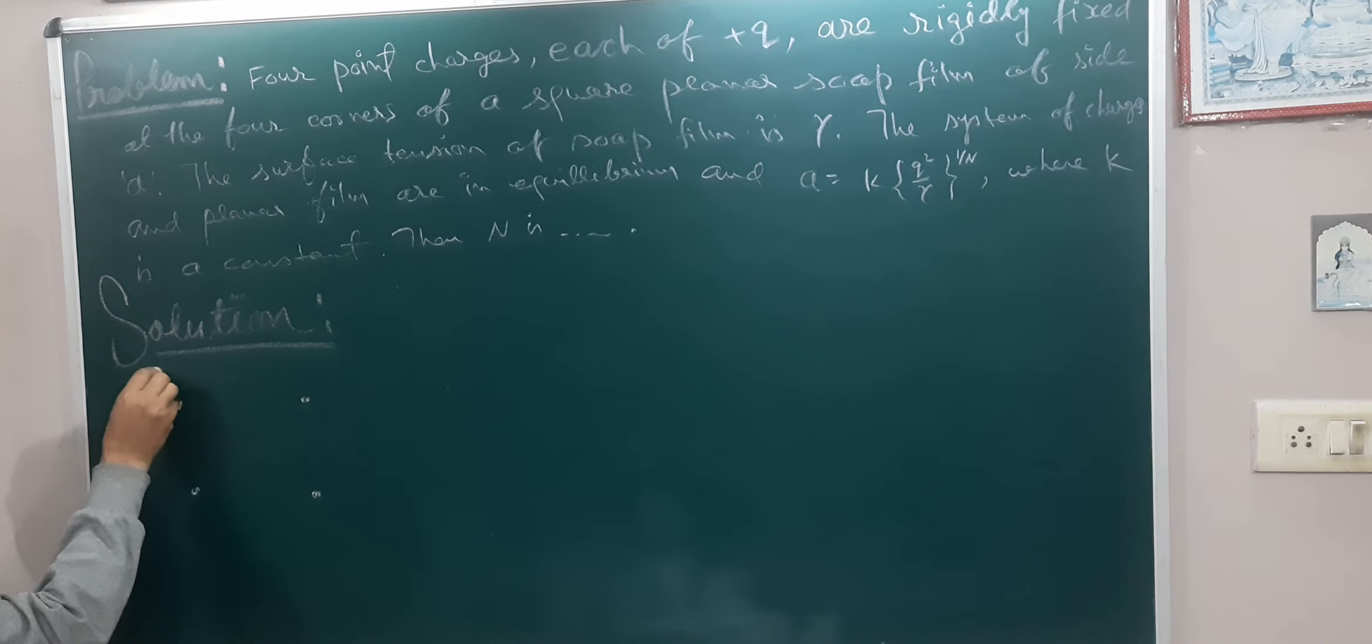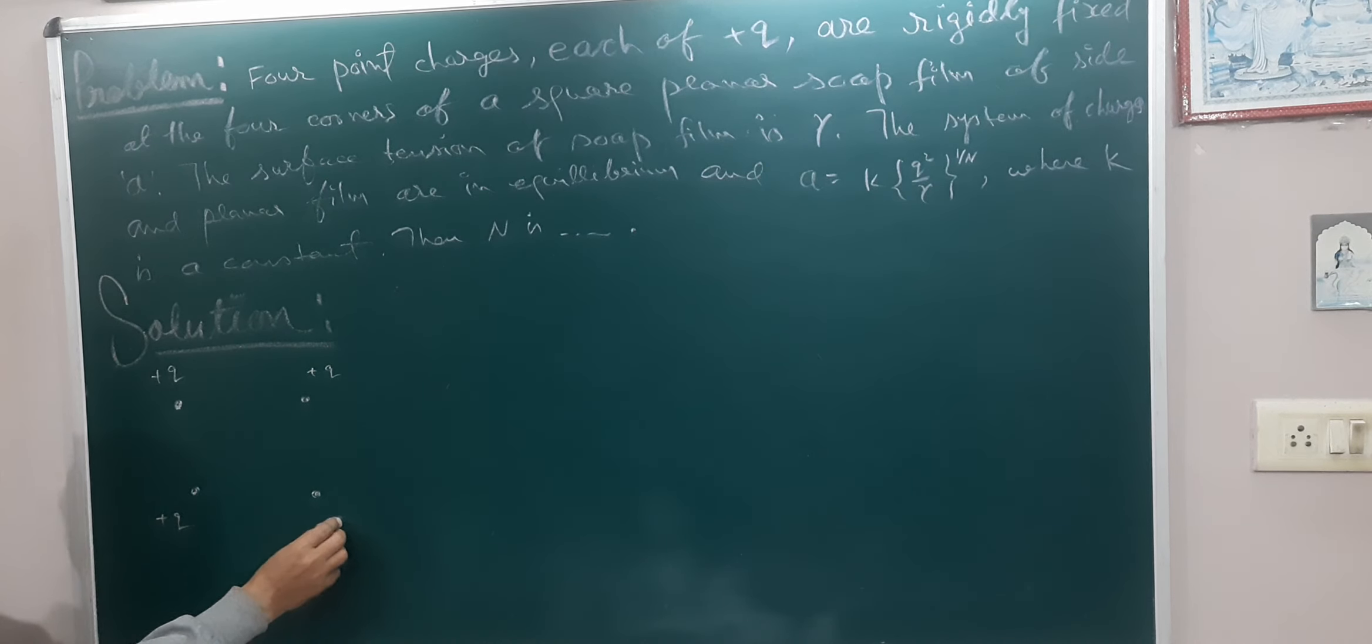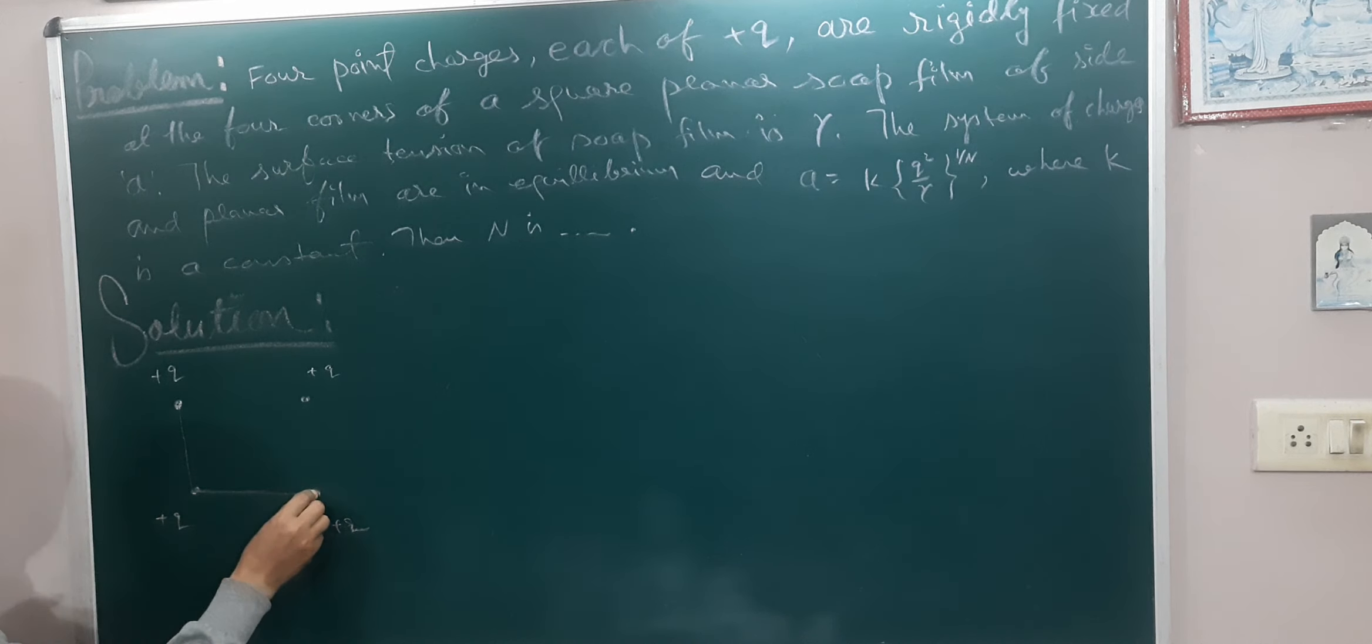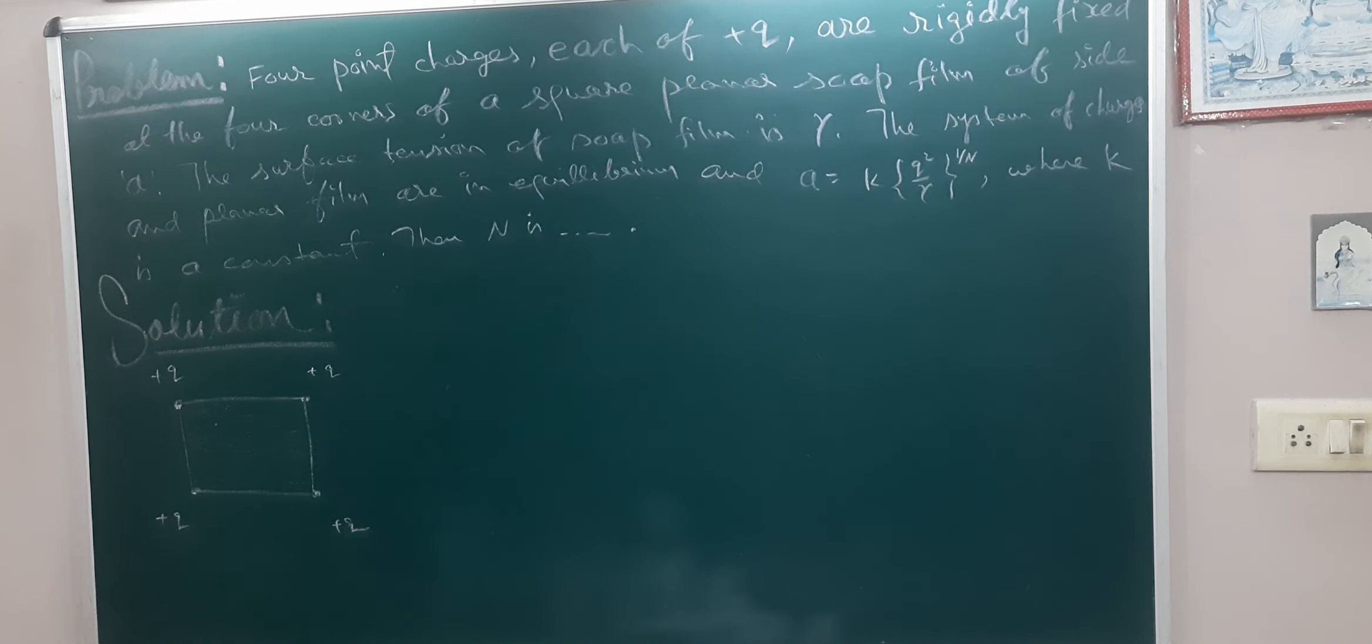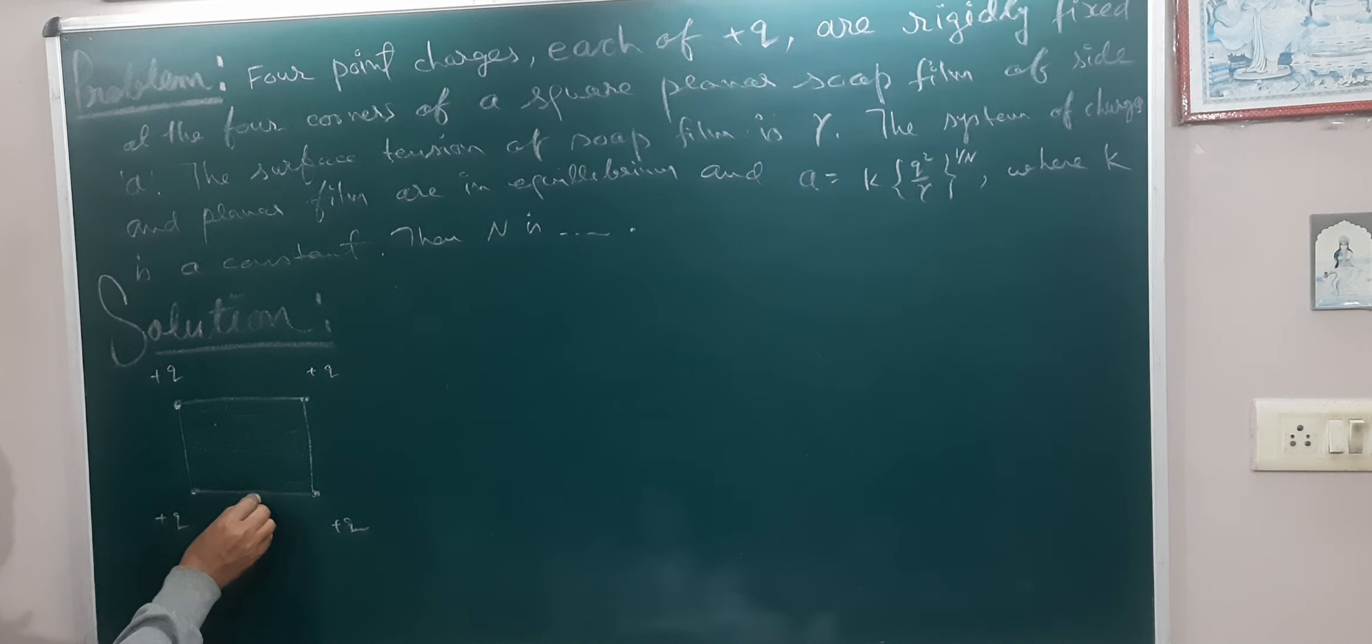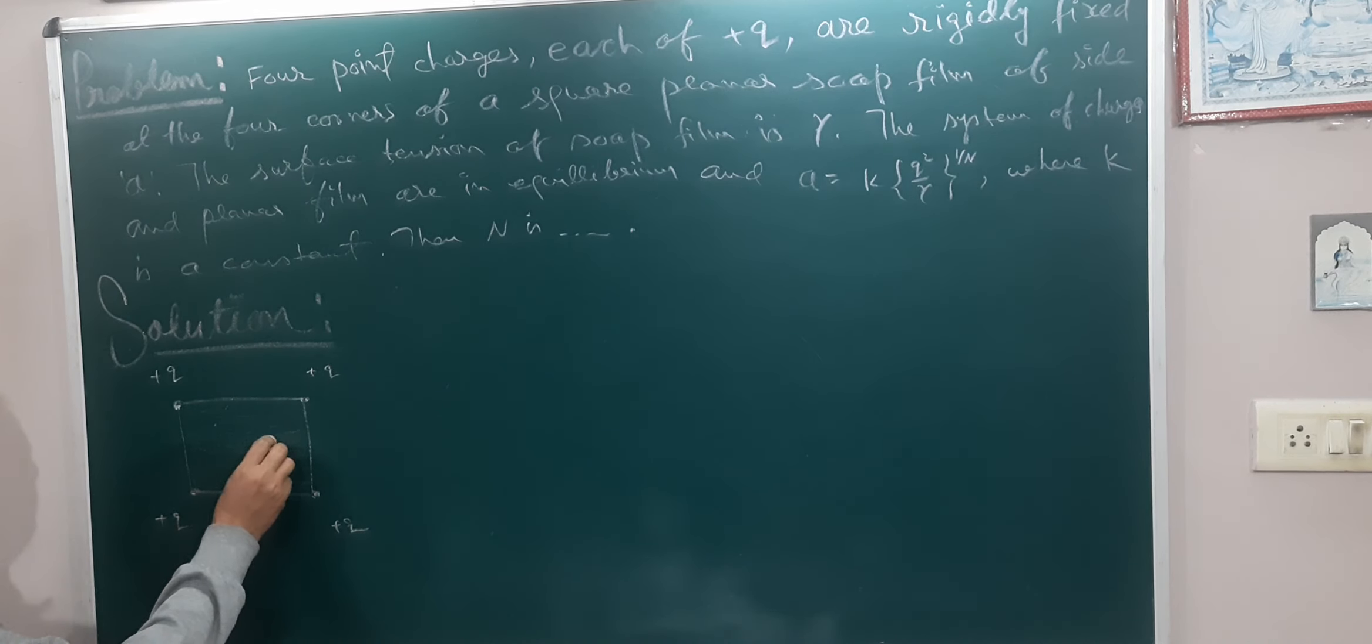Each plus Q, square planar soap film, side A. The surface tension of soap film is Y, gamma.